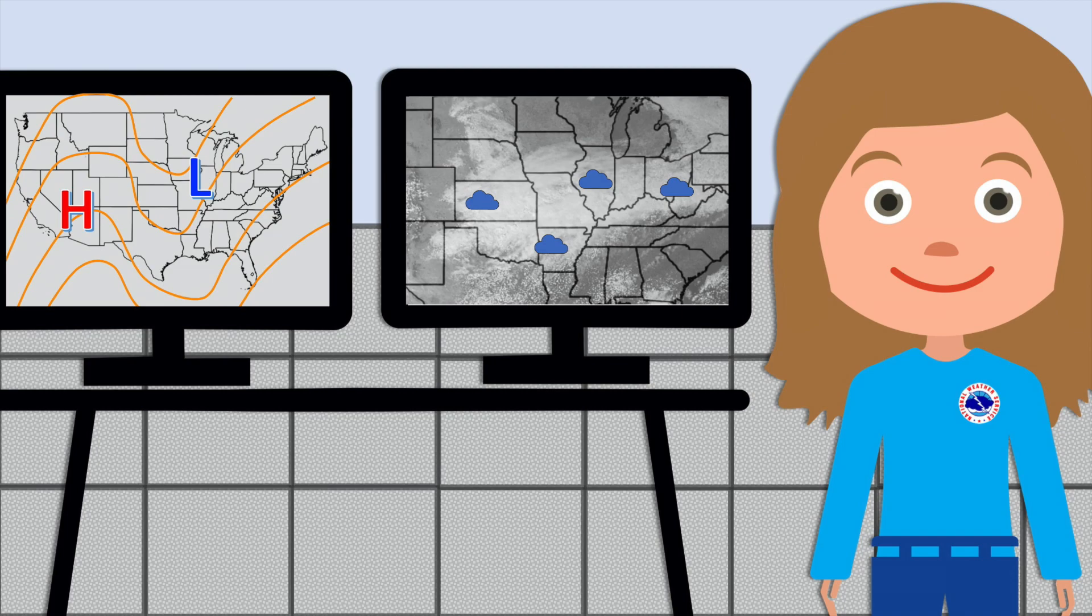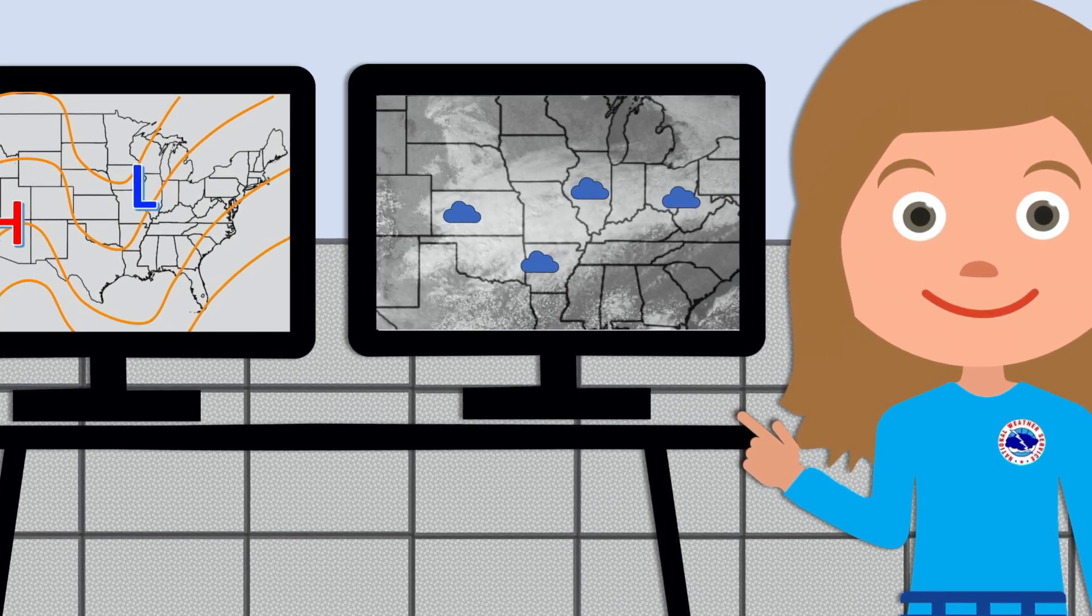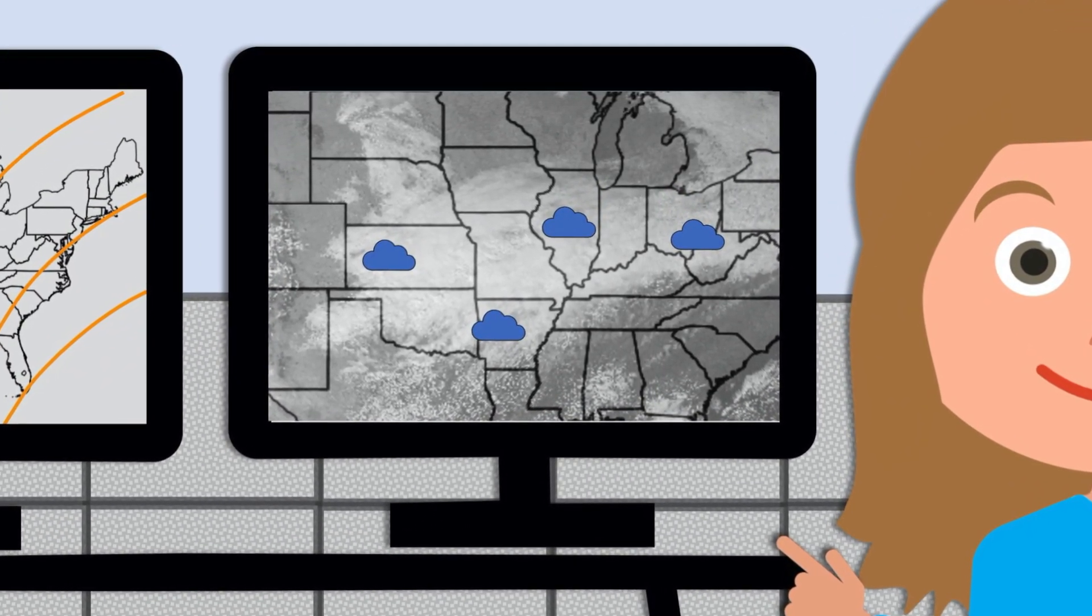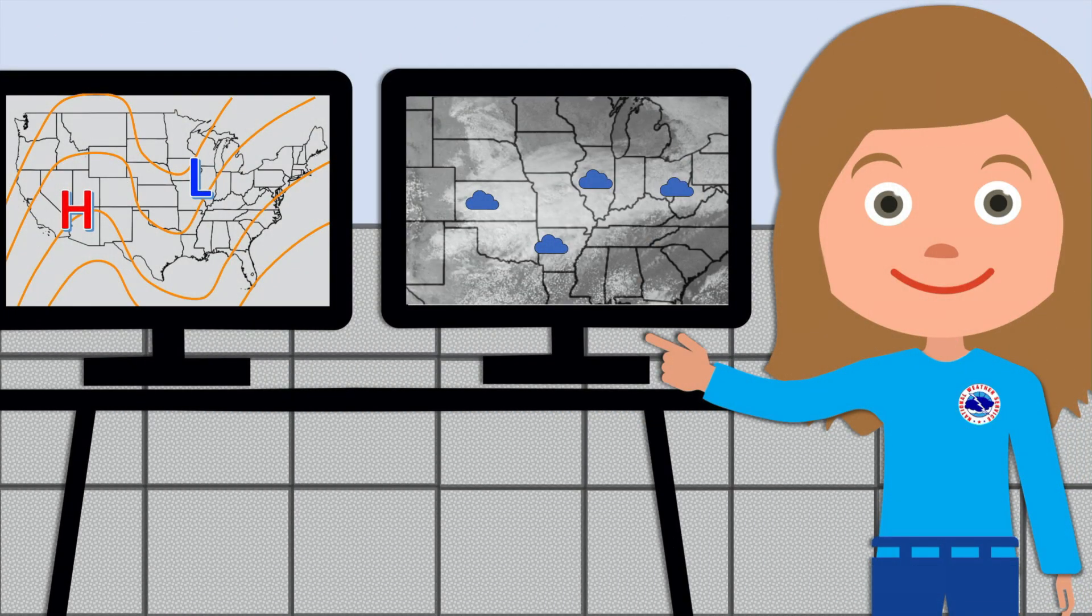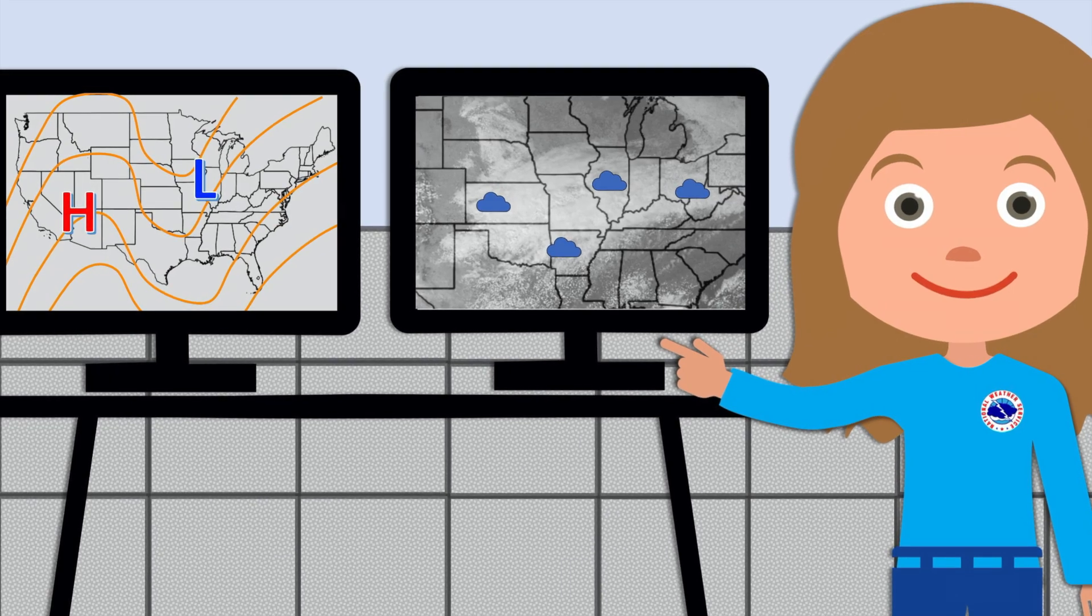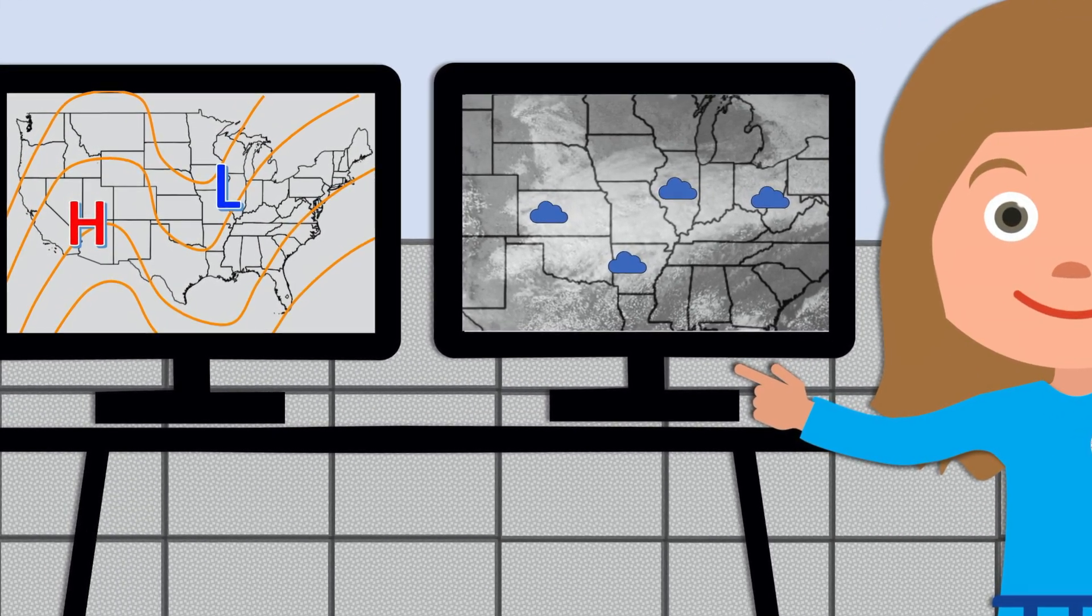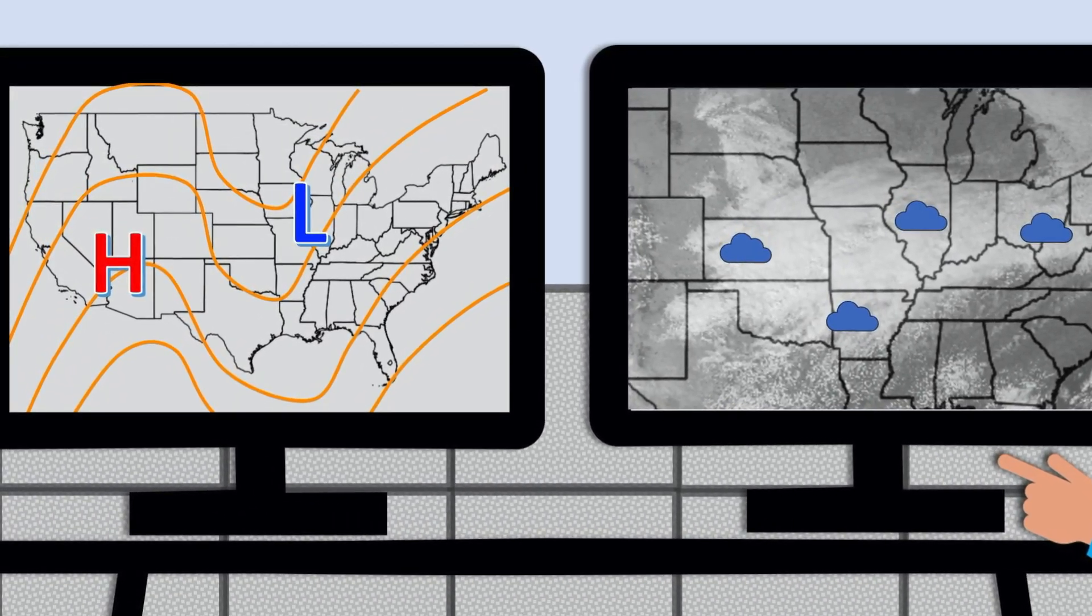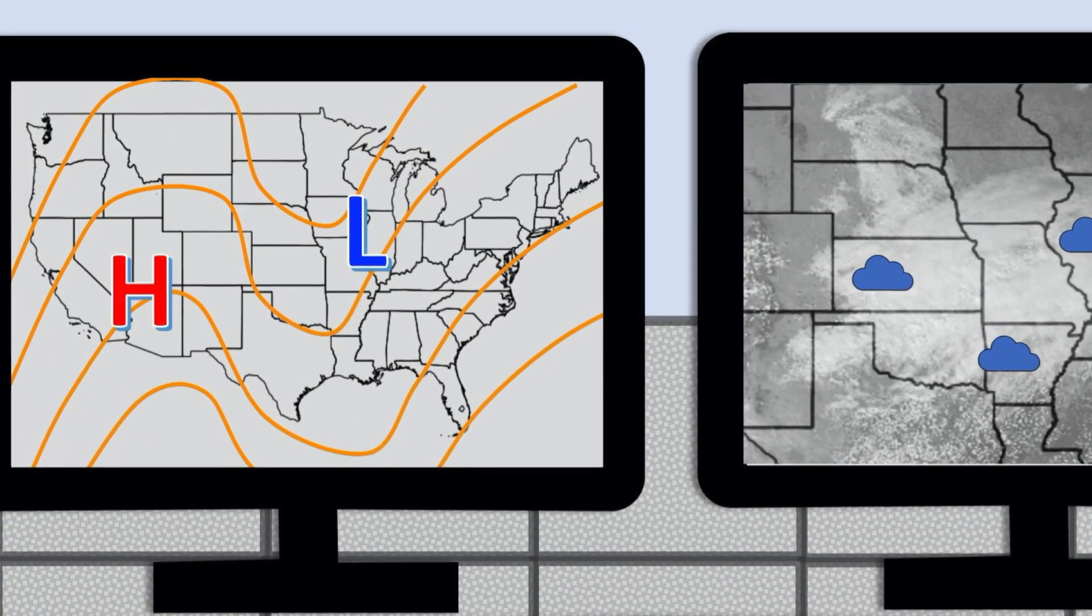Today I am working on the forecast for the week. I use tools like weather satellite. Satellite helps me to see where it is cloudy. Looks like it's pretty cloudy out there right now. I also use tools like weather models. Weather models help to show me what kinds of weather are coming next. This map is showing high pressure moving toward our area, so it is going to be sunny next week.